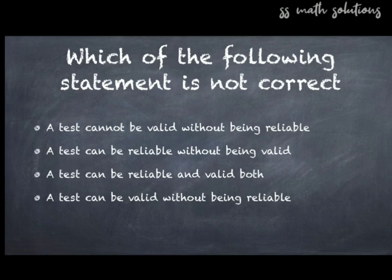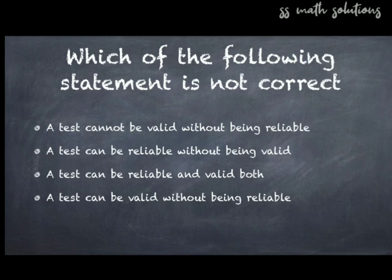Question 20: Which of the following statements is NOT correct? Options: a test cannot be valid without being reliable; a test can be reliable without being valid; a test can be reliable and valid both; a test can be valid without being reliable. The answer is option D — 'a test can be valid without being reliable' is not correct.